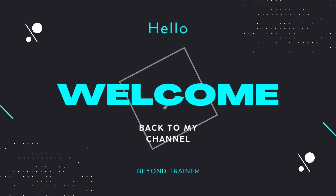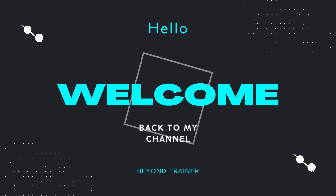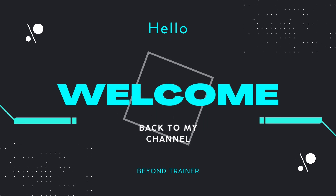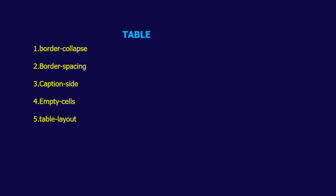Hey guys, welcome back to the channel. In our previous videos we have seen about major border properties. In today's video we're going to see about the table properties. First of all, what are these table properties? These properties can be added to the table created with HTML. The first table property is border-collapse, then we have border-spacing, caption-side, empty-cells, and table-layout. So these are the five properties.